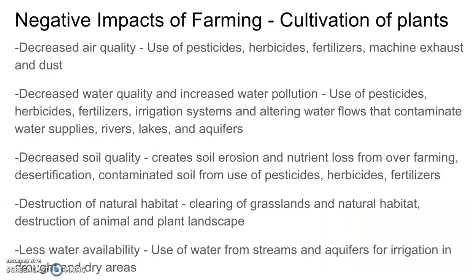Here are the negative impacts of farming. All cultivation of plants has negative impacts on the environment: decreased air quality from pesticides, herbicides, fertilizers, machine exhaust, and dust; decreased water quality and increased water pollution from pesticides, herbicides, fertilizers, and irrigation systems that alter water flows and contaminate rivers, lakes, and aquifers; and decreased soil quality and destruction of natural environments.